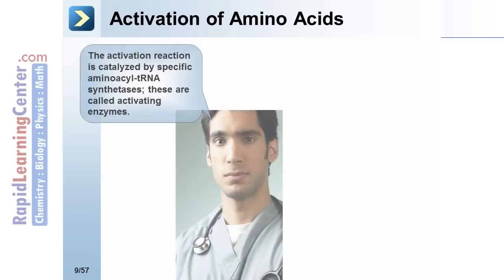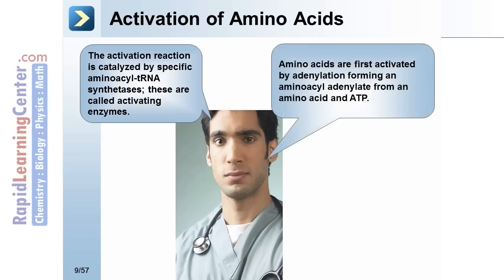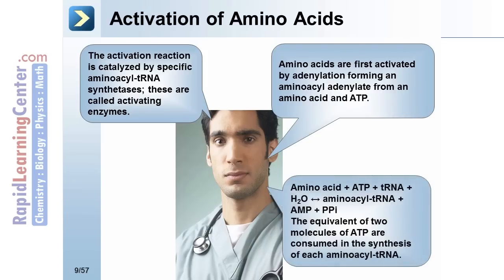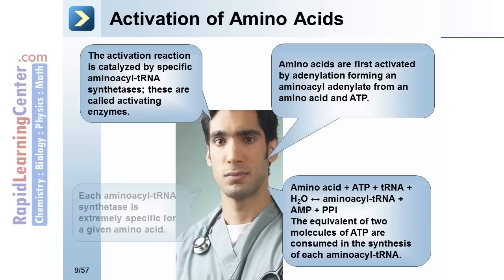Activation of amino acids. The activation reaction is catalyzed by specific aminoacyl tRNA synthetases, called activating enzymes. Amino acids are first activated by adenylation, forming an aminoacyl adenylate from an amino acid and ATP. Amino acid plus ATP plus tRNA plus water goes to aminoacyl tRNA plus AMP plus diphosphate. The equivalent of two molecules of ATP are consumed in the synthesis of each aminoacyl tRNA. Each aminoacyl tRNA synthetase is extremely specific for a given amino acid.